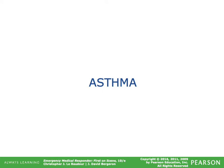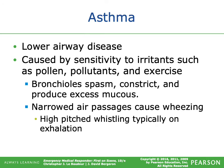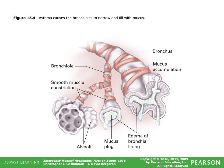Asthma is a lower airway disease caused by sensitivity to irritants such as pollen, pollutants, and exercise. The bronchioles spasm, constrict, and produce excess mucus. Narrowed air passages cause wheezing — a high-pitched whistling that typically occurs on exhalation. Looking at the images: the center bronchiole shows a mucus plug, the right bronchiole shows mucus accumulation, and there is also edema of the bronchiole lining, similar to what's seen in COPD or bronchitis.